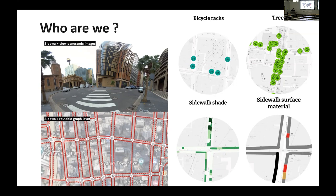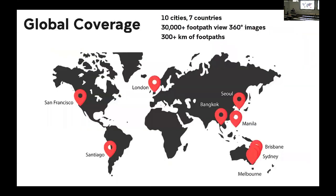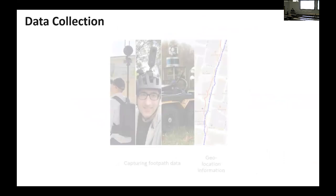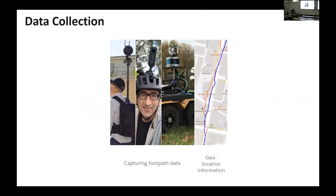So far we collect data from 10 cities across the globe. Many of them are in Asia Pacific, including Sydney, Melbourne, and Brisbane from Australia, Bangkok from Thailand, Seoul from Korea, Manila and Laoag from the Philippines, and other cities such as London, San Diego, and San Francisco. We are still collecting more data.